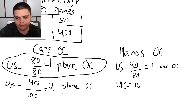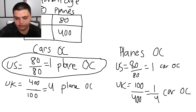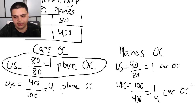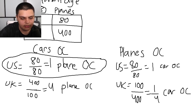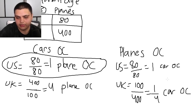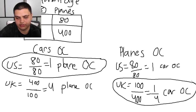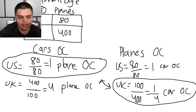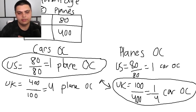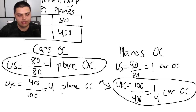For the UK's opportunity cost of planes: 100 cars divided by 400 planes equals one-fourth. So for every plane the UK produces, it only misses out on 0.25 of a car — a very low opportunity cost. The UK's opportunity cost for planes is about four times lower than the US's. So according to comparative advantage, the UK should produce planes and the US should produce cars. Then they'll trade for whatever deficit they have in the other good, reaching the most economically efficient outcome.